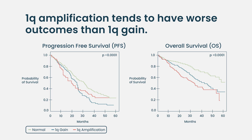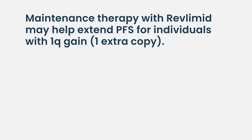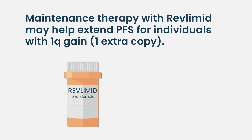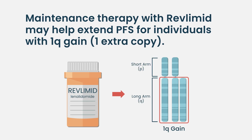We also see that some strategies, such as maintenance therapy with Revlimid for example, can help quite dramatically for those with just one copy number change. It can extend progression-free time really substantially for those with just one high-risk abnormality.